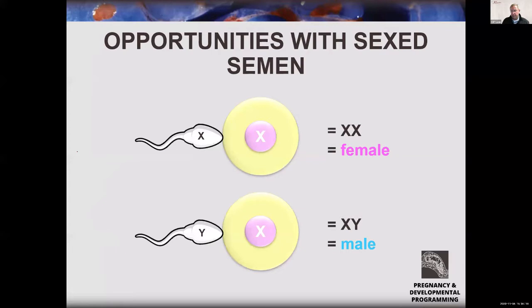The sex of a calf is generated through the sex of the semen, not from the female side. If the sperm carries an X chromosome and fertilizes the oocyte, you end up with a female. If the sperm carries a Y chromosome and fertilizes the egg, you end up with XY, which results in a male. By figuring out how to separate X and Y sperm, we can increase our skew towards male or female animals.